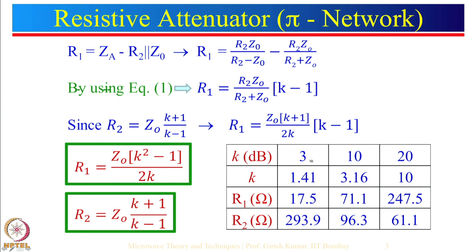Let us now look at examples for different values of attenuation: 3 dB, 10 dB, and 20 dB. Remember this is a voltage ratio, so we take 20·log(K). So 20·log(10) = 20 dB. By substituting the value of K into the expressions and taking Z0 = 50 ohm, we get R1 and R2 values. As K increases toward 30 dB, R2 tends toward 50 ohm, and R1 tends toward Z0·K/2, for example 50·10/2 = 250 ohm for 20 dB.